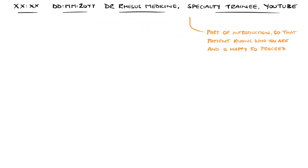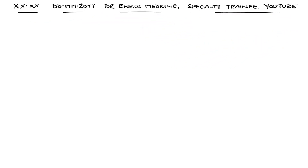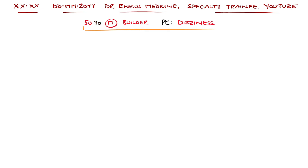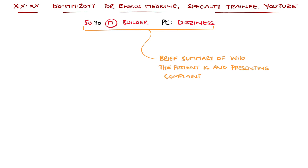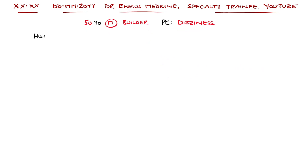I tend to first list the demographics of the patient — the main ones being the age, sex, and occupation. For example, a 50-year-old male builder. This gives a little context of who the patient is, and also, very briefly, what presenting complaint has brought them in.